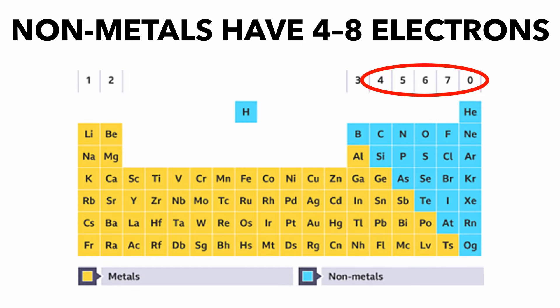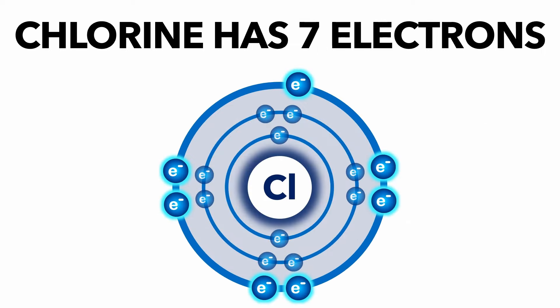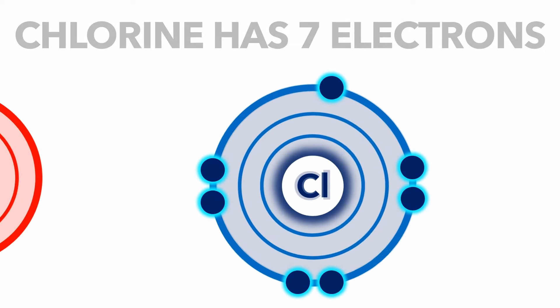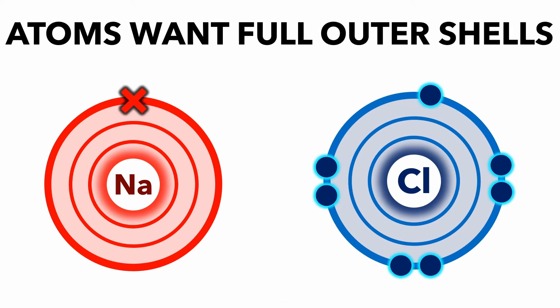Non-metal atoms generally have between four and eight electrons in their outer shell. Chlorine, for example, has seven, shown as dots. But all atoms want a full outer shell.